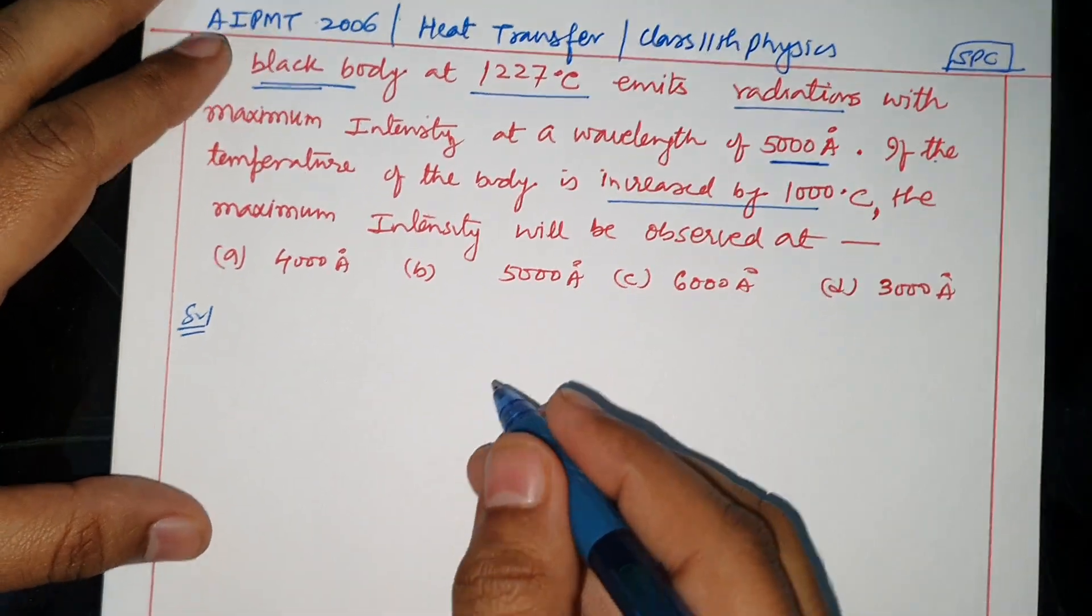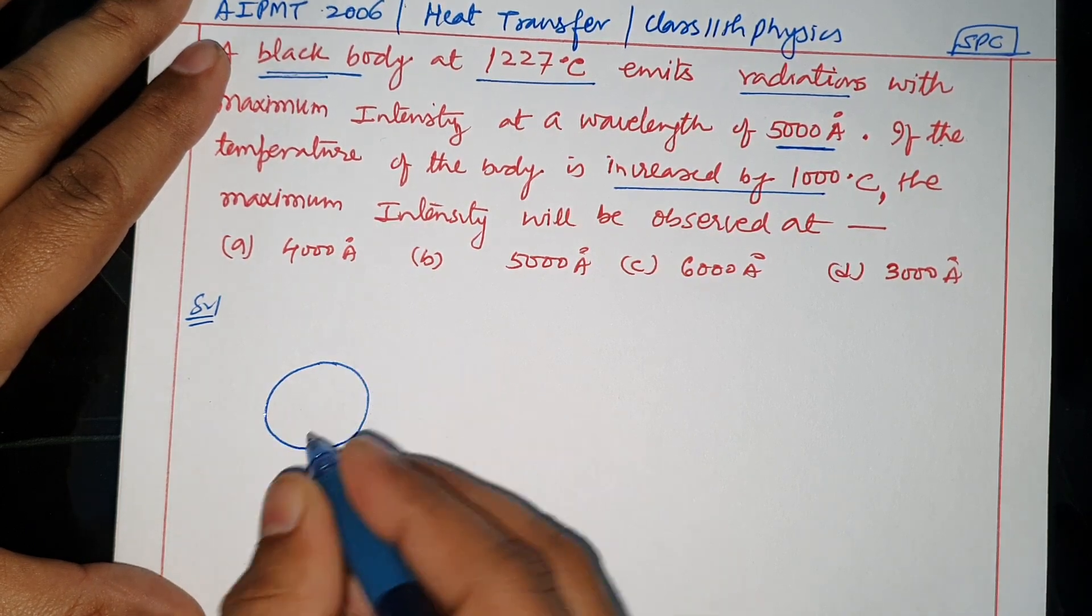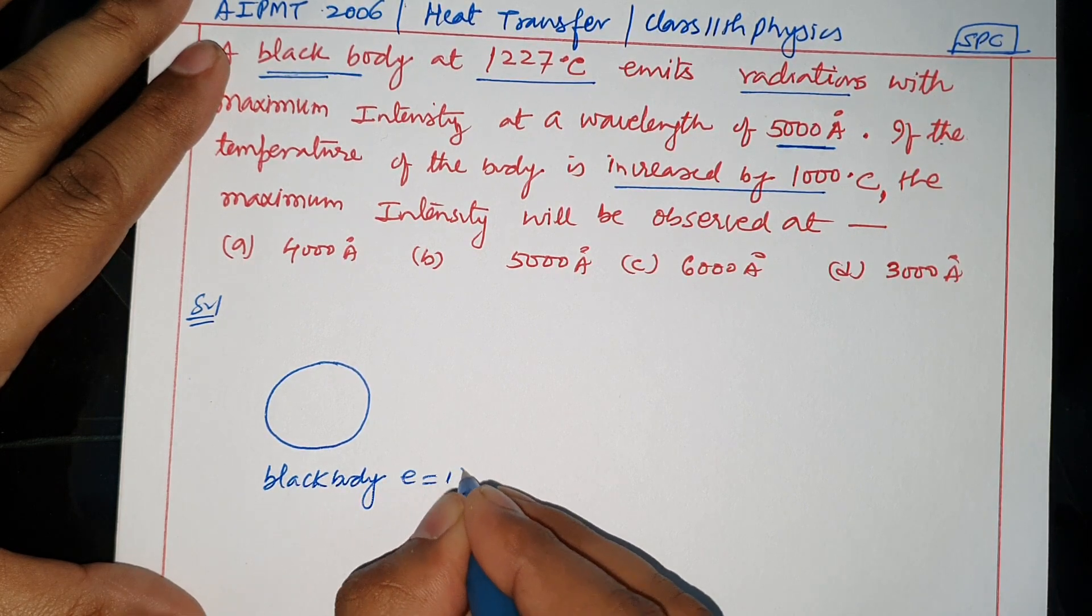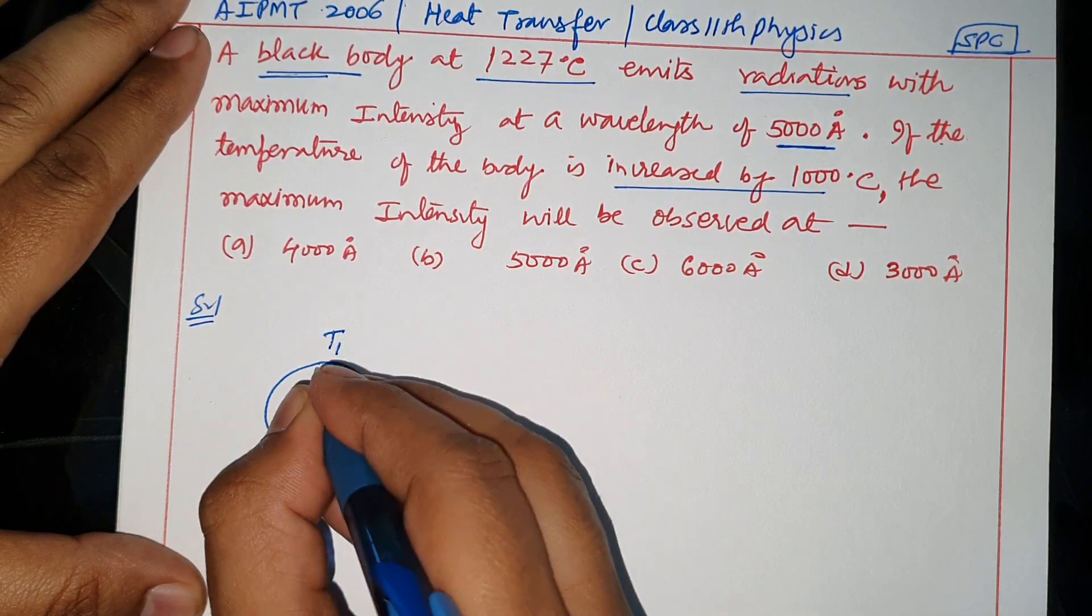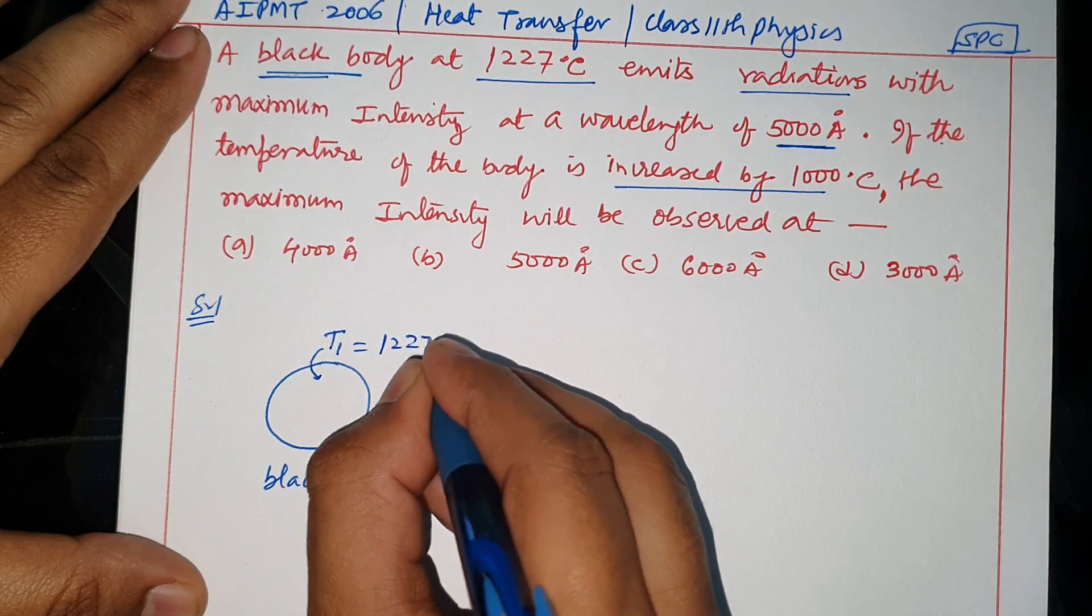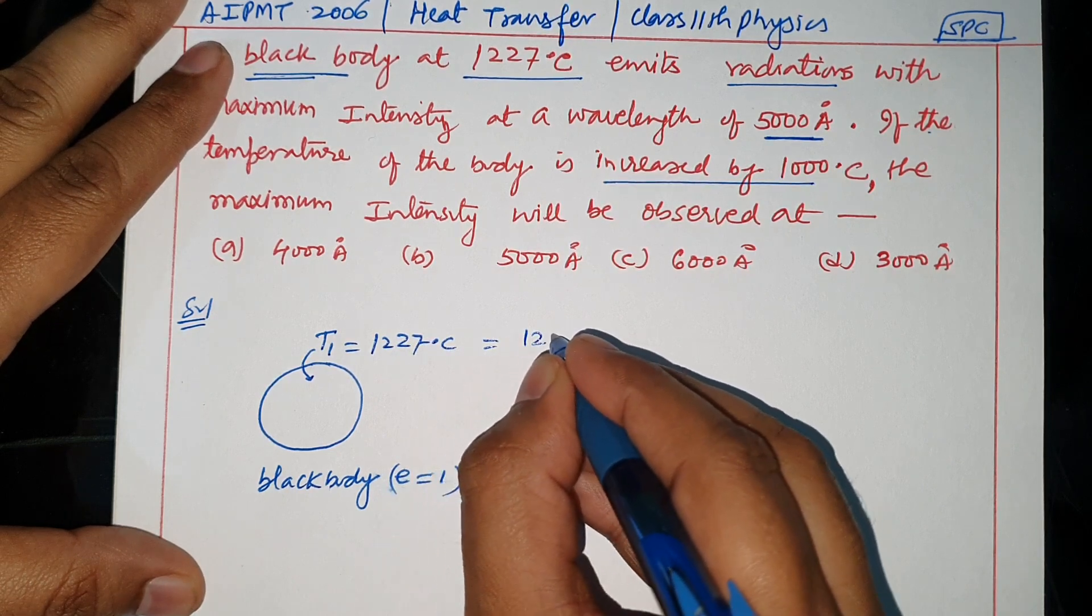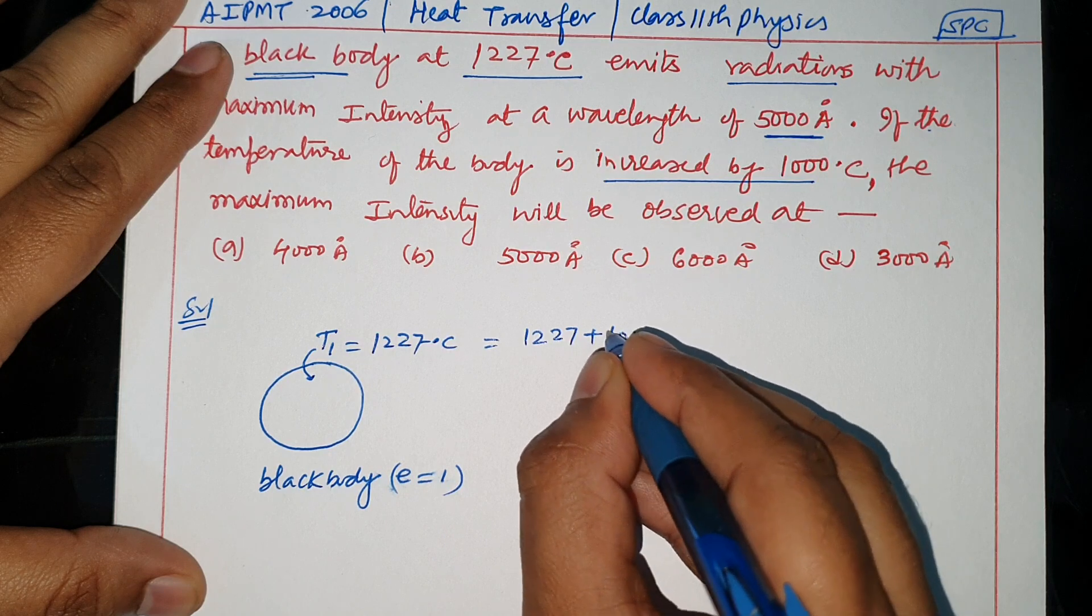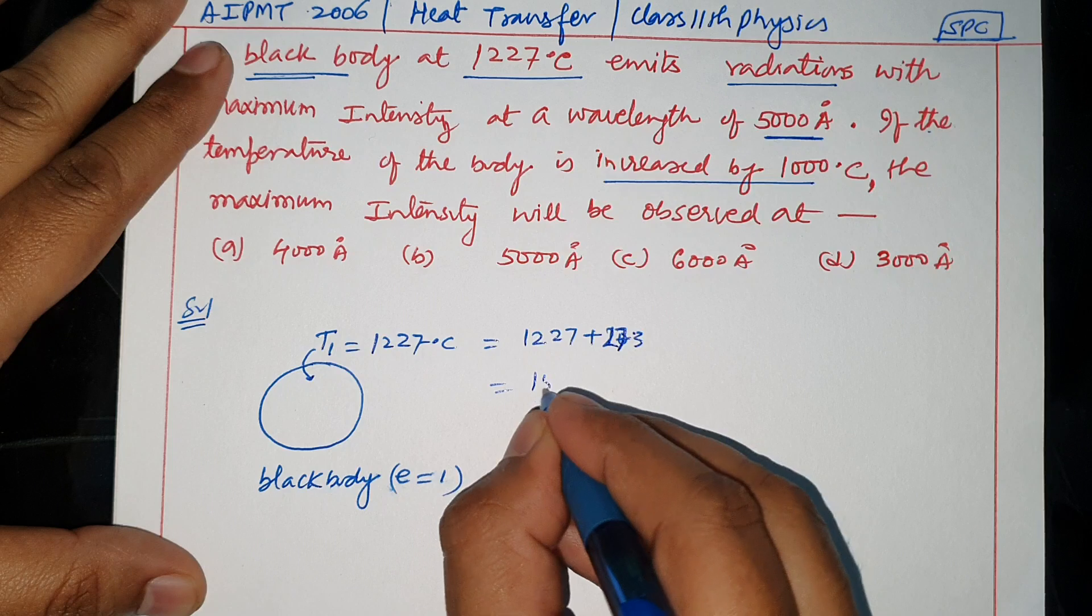If there is a black body, this is the black body. The surface temperature is T1. This black body is at 1227 degree Celsius. So we convert: 1227 plus 273 equals 1500 Kelvin.